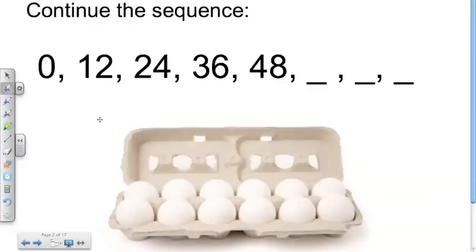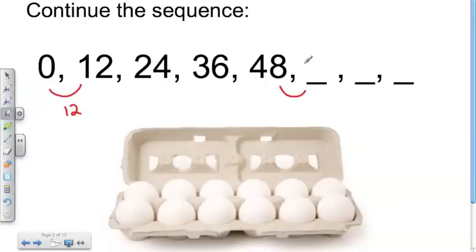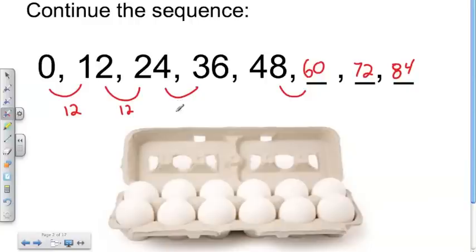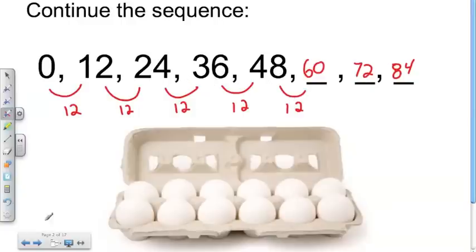Let's look at this sequence first. I'm going to want you to try to complete this sequence. Most of you looking at this will probably find this pretty simple. We have 0, 12, 24, 36, 48 — you'll recognize right away that every single step we're jumping up by 12. So 48 plus 12 gives us 60, then 72, and 84. Between every set of values, we have an increment, or an increase, of 12. It's a constant increase.